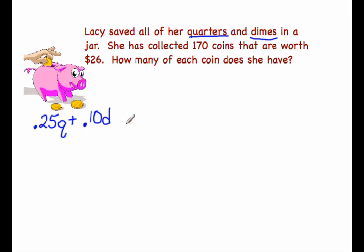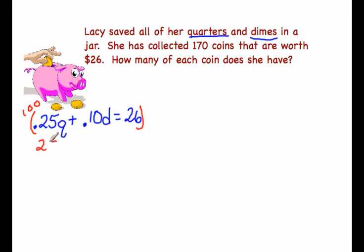Here we have a money plus money problem, so money plus money always equals more money. That gives us $26. Most of the time we don't really care for working with decimals, so let's go ahead and multiply this equation by 100 and that will get rid of all of our decimal points. That gives us 25q plus 10d equals 2,600.